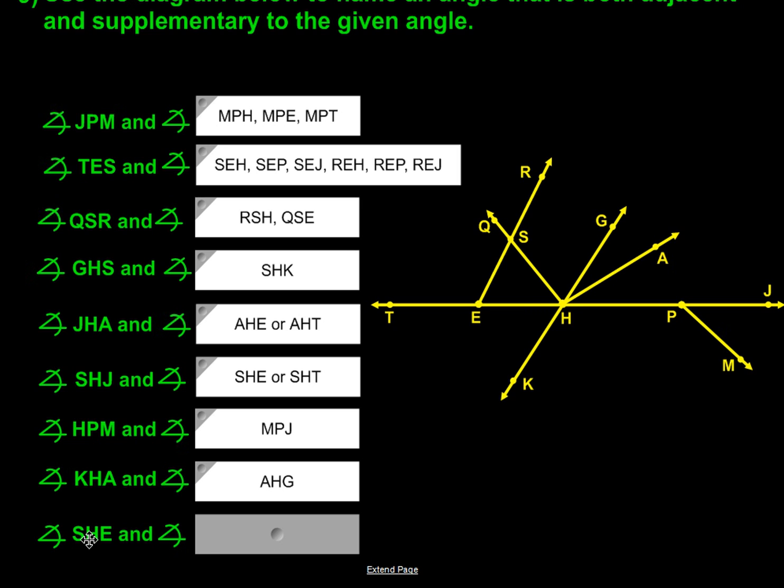And our last angle is SHE. So it's this right here. And so that's an acute angle. We would need an obtuse angle from this side. So it's going to be SHP. Or we could go all the way down to SH, move past P, and go to J.